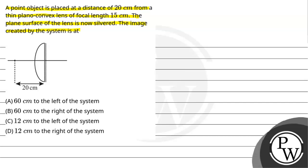The image created by the system is at: Option A, 60 cm to the left of the system; Option B, 60 cm to the right of the system; Option C, 12 cm to the left of the system; Option D, 12 cm to the right of the system.